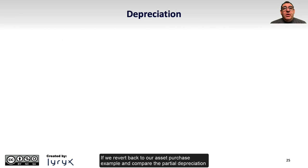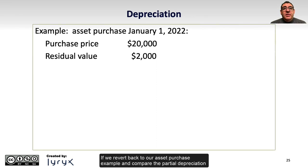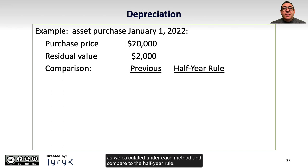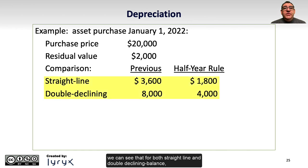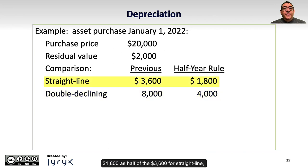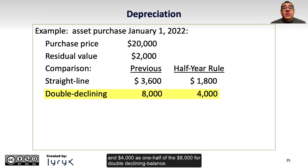If we revert back to our asset purchase example and compare the partial depreciation as we calculated under each method and compare to the half-year rule, we can see that for both straight-line and double-declining balance, the half-year amounts would be exactly one-half of the amounts we previously calculated: $1,800 as half of the $3,600 for straight-line, and $4,000 as one-half of the $8,000 for double-declining balance.